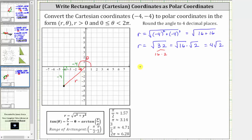And now let's determine the angle theta. Theta is equal to arctangent of y divided by x, which in our case is negative four divided by negative four.